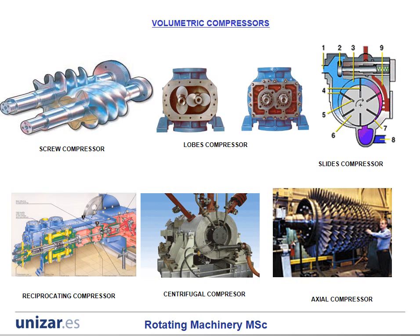Here you can see a representation of the most common compressors installed in chemical and petrochemical plants. On one side we can see volumetric compressors represented by screw compressor, lobe compressor, and reciprocating compressor. On the other side, the dynamic compressor — non-volumetric compressor — is represented by centrifugal compressor and axial compressor.